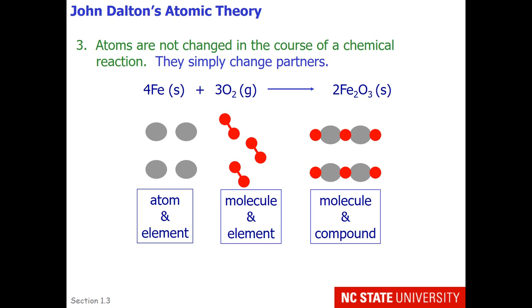Finally, atoms are not changed in the course of a chemical reaction. They simply change partners. You can take iron, which is an atom and an element, and combine it with oxygen, which is a molecule in an element, and you will get iron(III) oxide, which is a molecule and a compound.